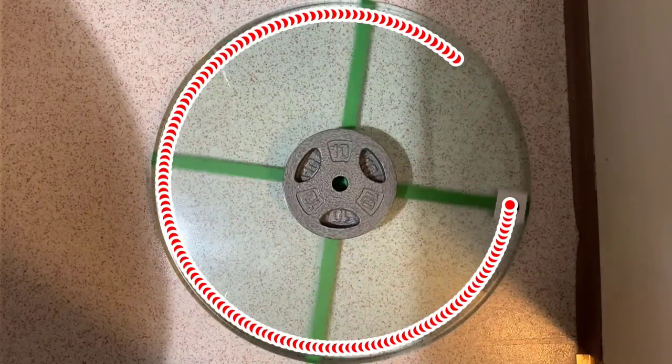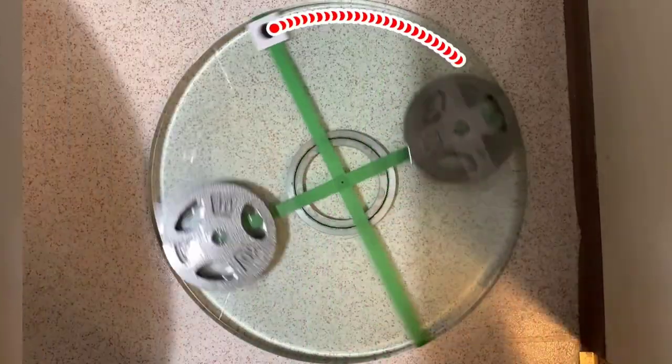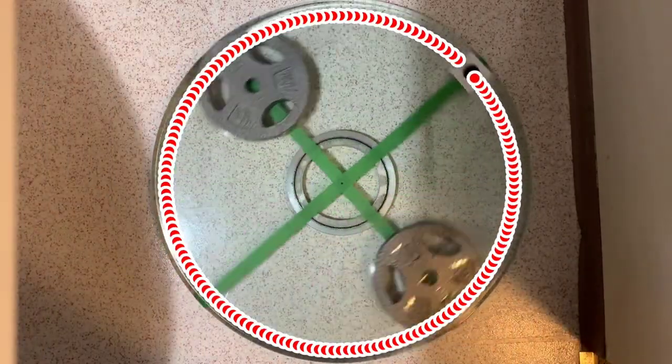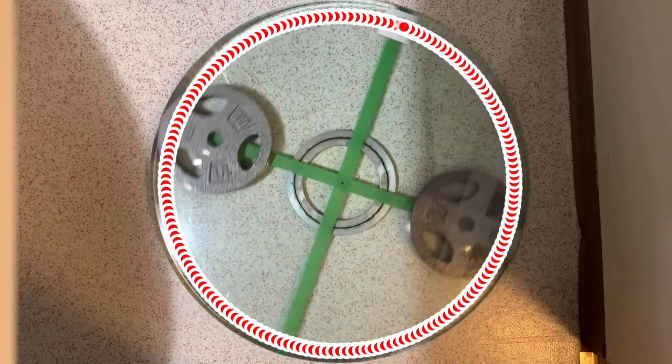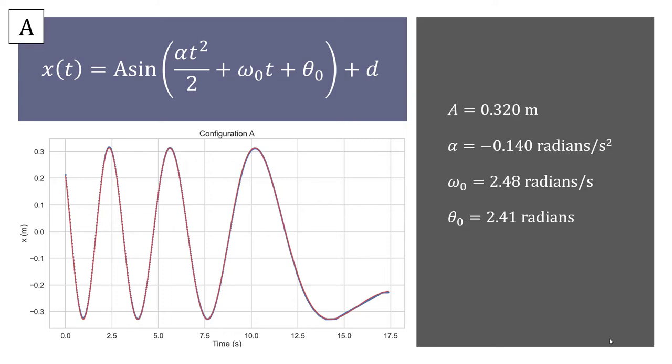So it's hard to say if both systems actually started with the same speed, so a better way to do this would be to track a point with video analysis and analyze the data with Python. Here is a plot of the x position versus time for configuration A, and you can see that it is well fit by a frequency modulated sine wave. Here are the fit parameters, and the important one is the angular acceleration of negative 0.140 radians per second squared, because that is inversely proportional to the moment of inertia.